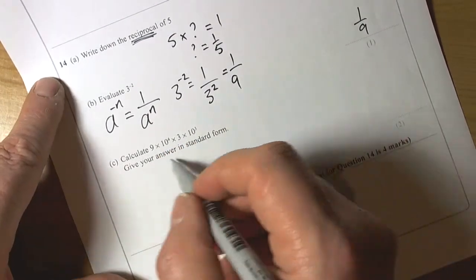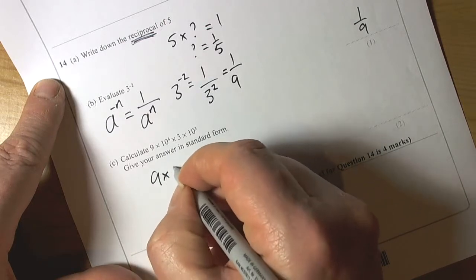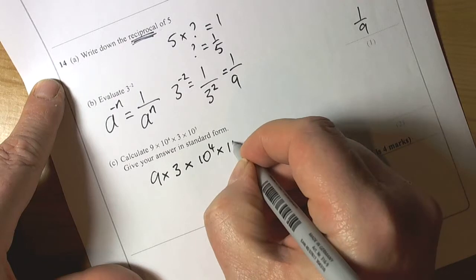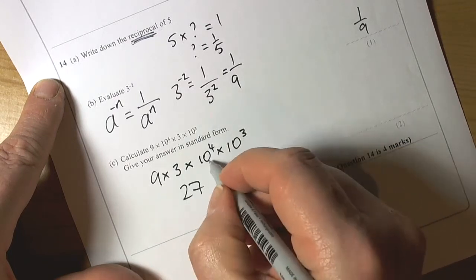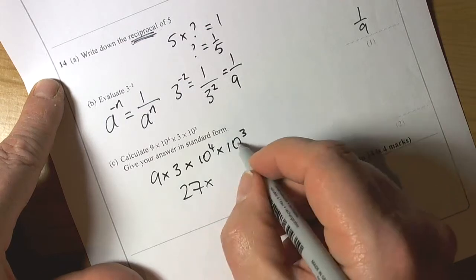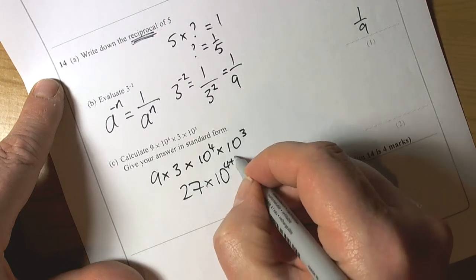Calculate the standard form. Here we've got a sum that we're doing in timesing, so this could be rearranged. We can do nine times three, the numbers first, then do the powers of ten. Nine times three is twenty-seven. Ten to the power of four times ten to the power of three—we need to remember that when we times the same base numbers, the powers can be added, so four plus three.